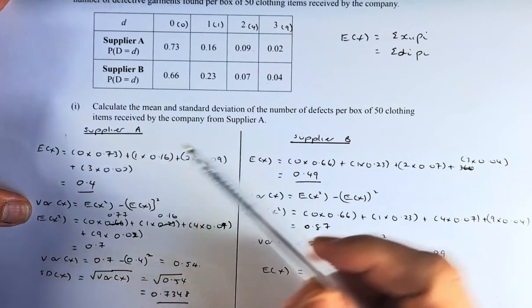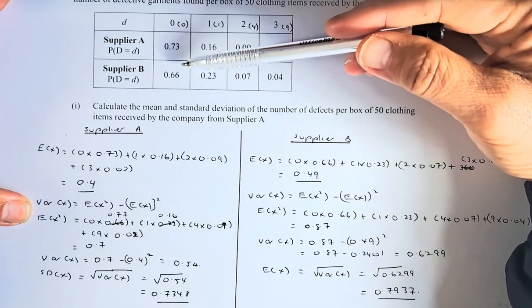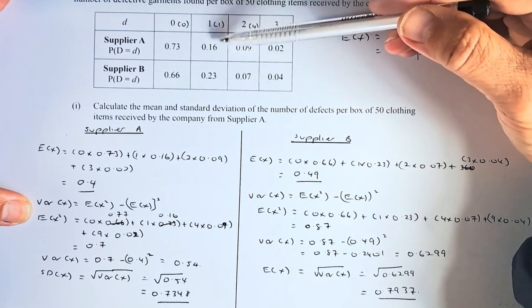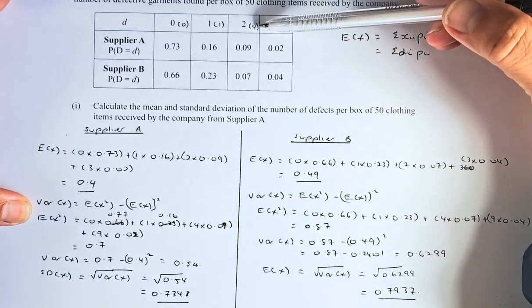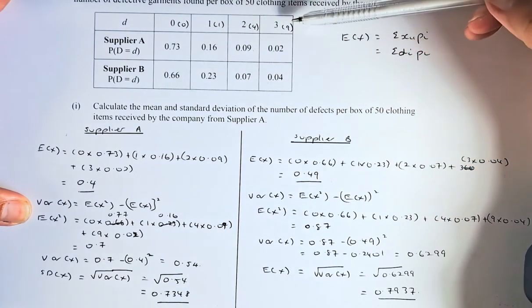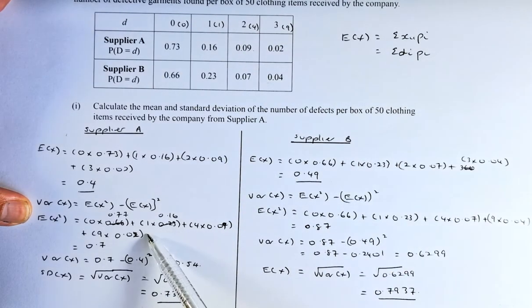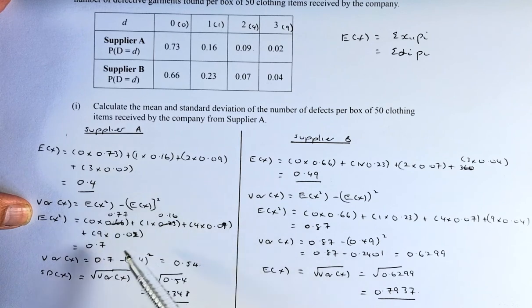To calculate E(X²), we do the same thing. 0 multiplied by 0.73, this is for Supplier A, plus 1 times 0.16, plus 4 times 0.09, plus 9 times 0.02. This can be found on this line here. If you put in your calculator, the answer is 0.7.